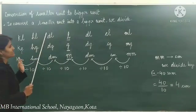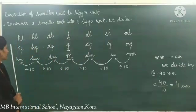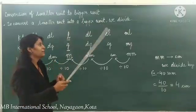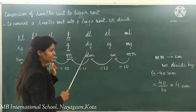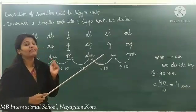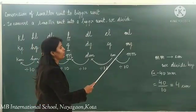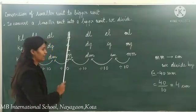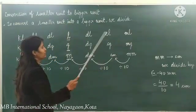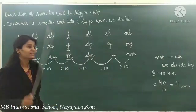Moving right side from kilogram means multiplication by 10. But now we are moving from right to the left side — left side move means we divide by 10. Now if you have to convert 400 milligram into gram, you have to divide by 1000.